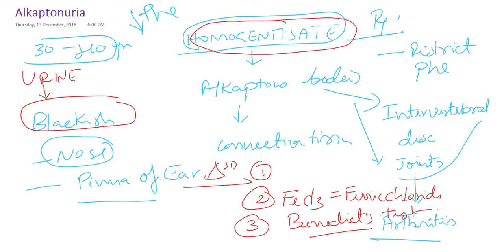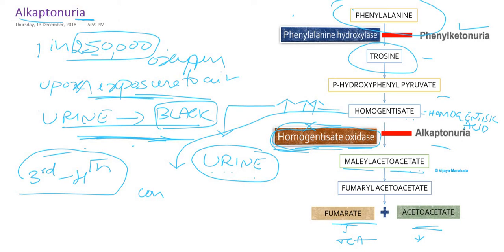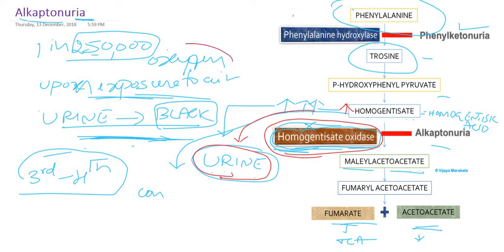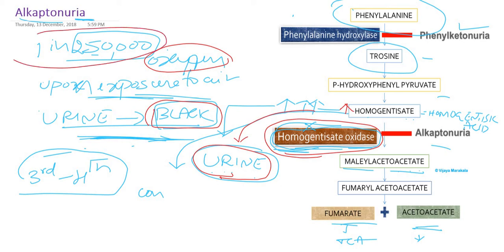The main take-home message: alkaptonuria is an inborn error of phenylalanine metabolism due to deficiency of homogentisic acid oxidase. Homogentisic acid accumulates in the blood and appears in the urine, which turns black upon contact with atmospheric oxygen. It is a very rare and not fatal disorder. After 30 to 40 years, patients may suffer arthritis or joint pain due to deposition of alkapton bodies. That is why it is named alkaptonuria. Thanks for watching.